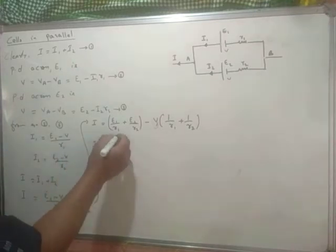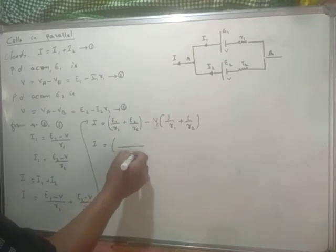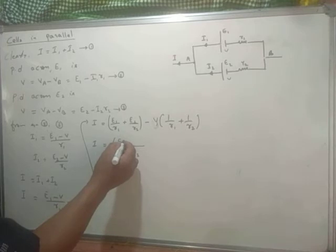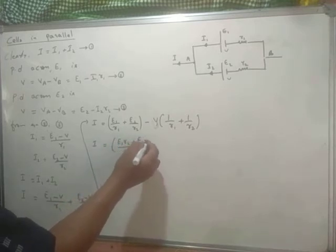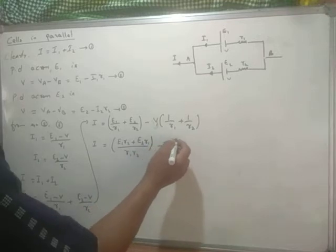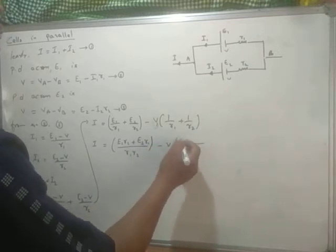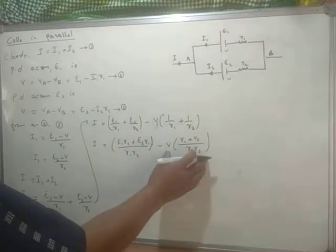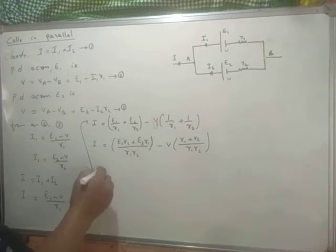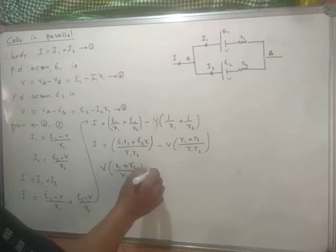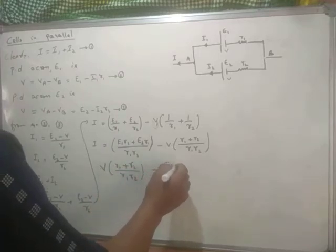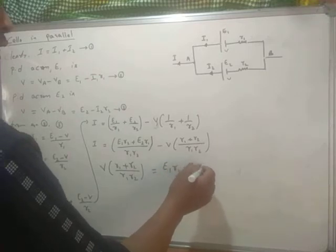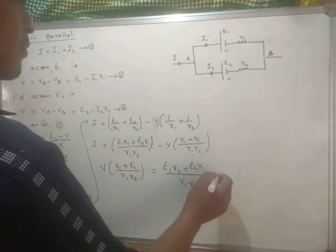Finding the LCM, which is the product R1 R2, and cross-multiplying gives E1 R2 plus E2 R1 minus V times (R1 plus R2), all over R1 R2. Transferring the V term to the left side, it becomes positive, so the right-hand side becomes E1 R2 plus E2 R1 over R1 R2, minus I.